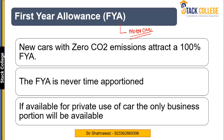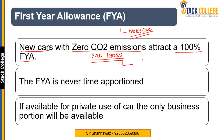Cars which are new and have zero CO2 emissions attract 100% First Year Allowance. For example, if I have purchased a car worth £1 million having zero CO2 emissions, then I will claim 100% First Year Allowance immediately.